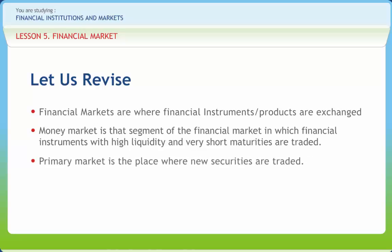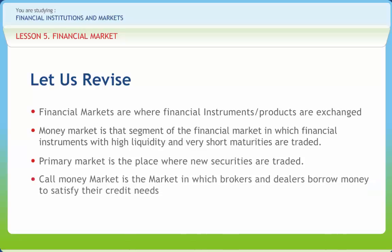Primary market is the place where new securities are traded. A floor broker executes orders for fellow members and receives a share of the brokerage commission charged by a commission broker to his or her constituent. Secondary market is the place where existing securities are traded. Call money market is the market in which brokers and dealers borrow money to satisfy their credit needs, either to finance their own inventory of securities or to cover their customers' margin accounts.